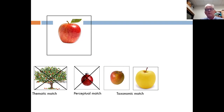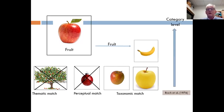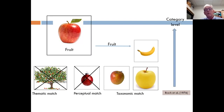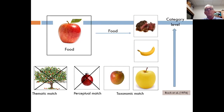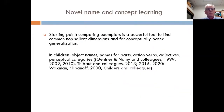We know since Eleanor Rosch that there are different category levels in our classification system. The child might be supposed to learn not the word 'apple' but the word 'fruit' — so the same stimulus should be associated with another word and with different stimuli, a broader category. It could also be even broader — in the case of 'food,' for example, which could include meat, which is quite different from apple.